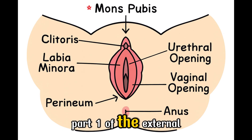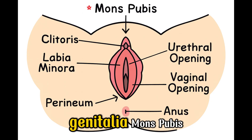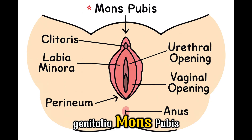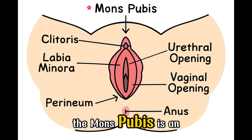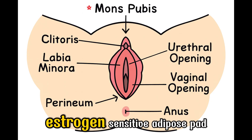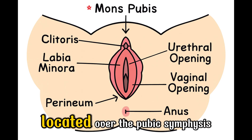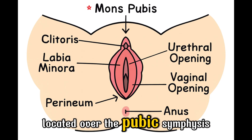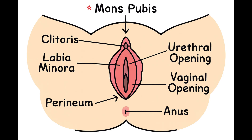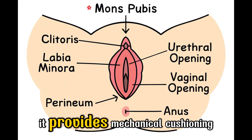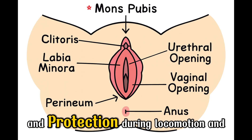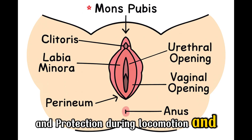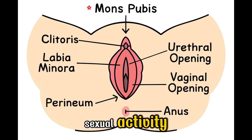Part 1 of the external genitalia: mons pubis. The mons pubis is an estrogen-sensitive adipose pad located over the pubic symphysis. It provides mechanical cushioning and protection during locomotion and sexual activity.